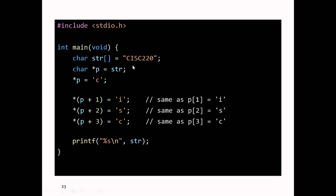String number one is the string literal CISC220. So somewhere in memory, when you write this, the C compiler will allocate a chunk of memory and put the letters CISC220 slash 0 in that memory. So that's the string that represents the literal.